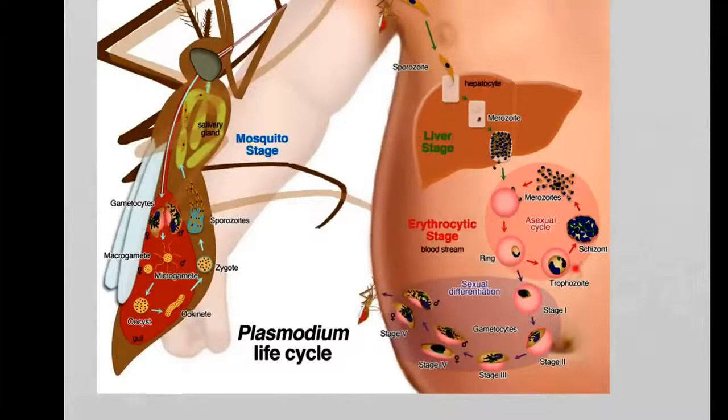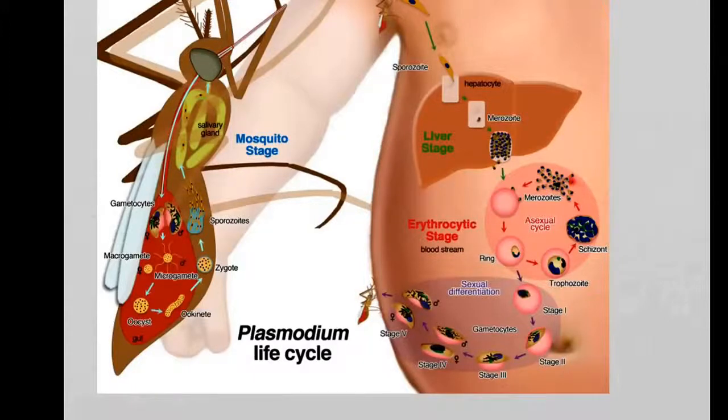This trophozoite undergoes lots of different replications and will produce lots of what is called schizonts. These are another form of the Plasmodium organism. These schizonts then sooner or later will rupture the red blood cell and release more of these merozoites.